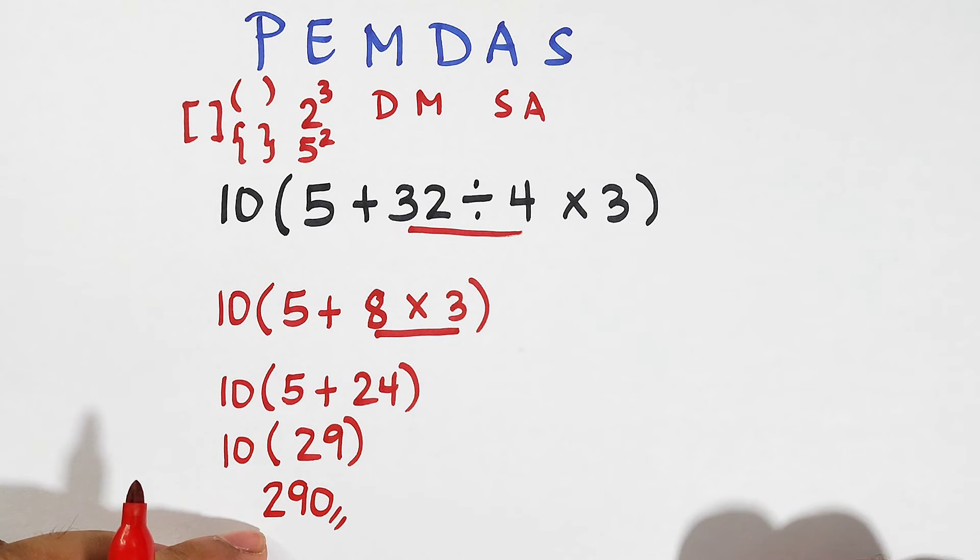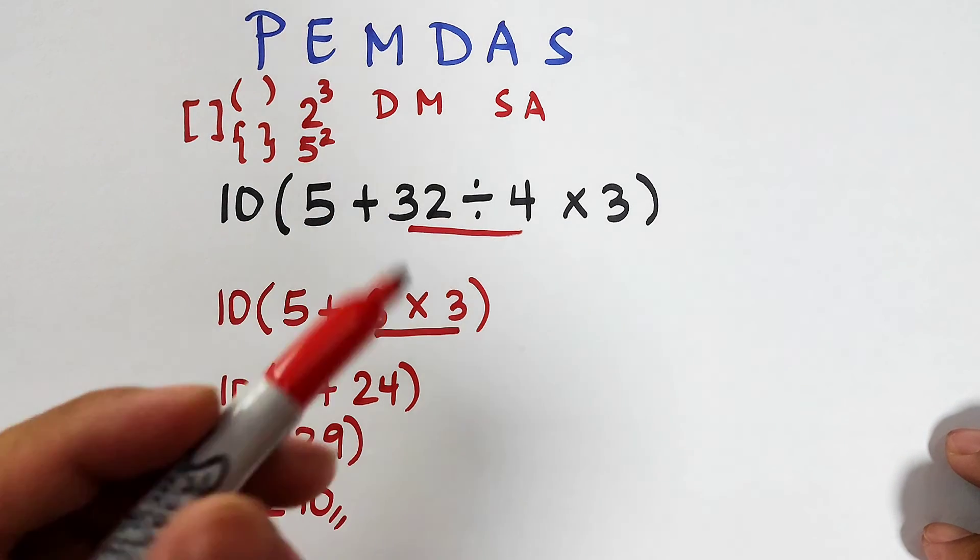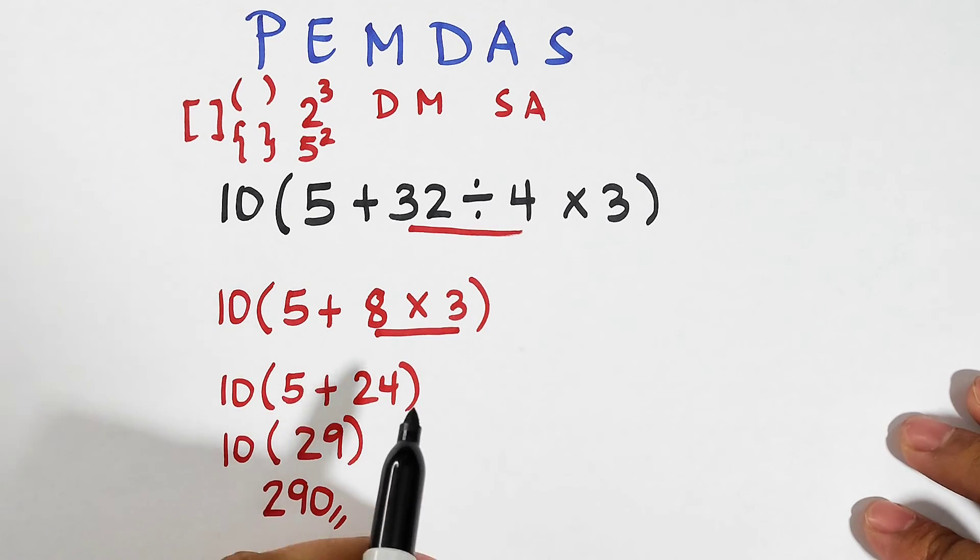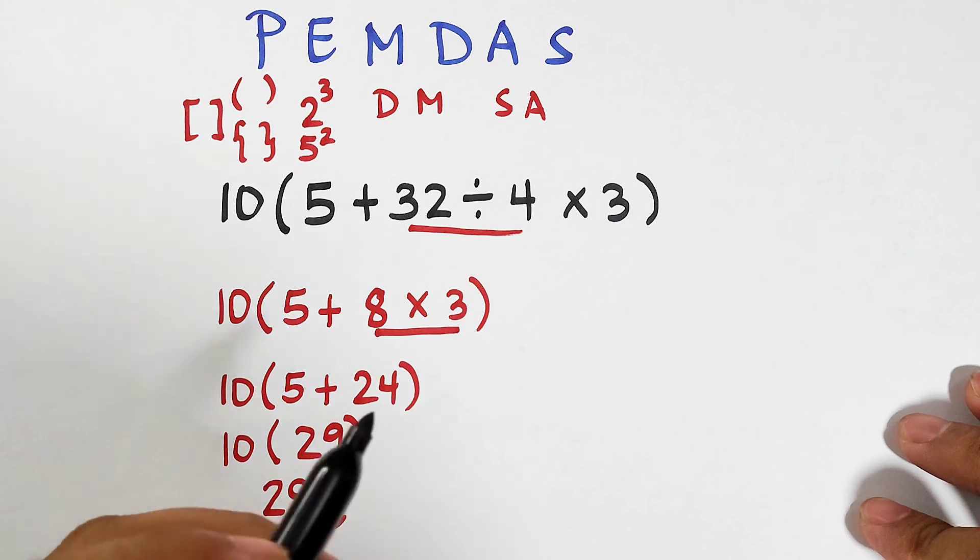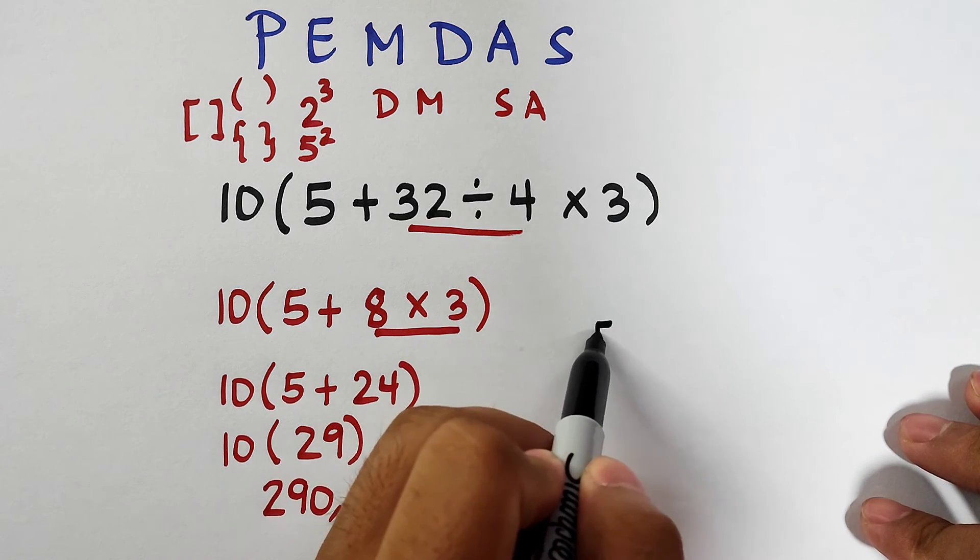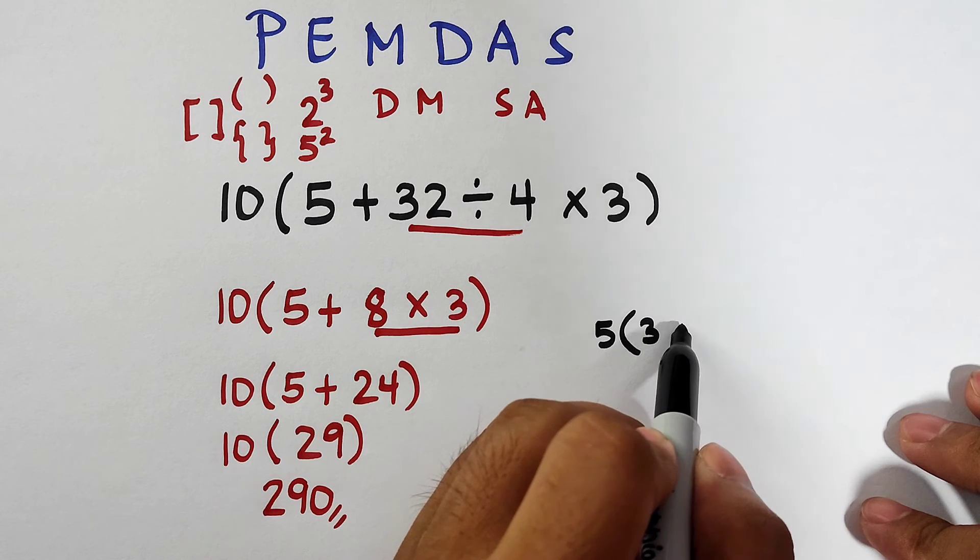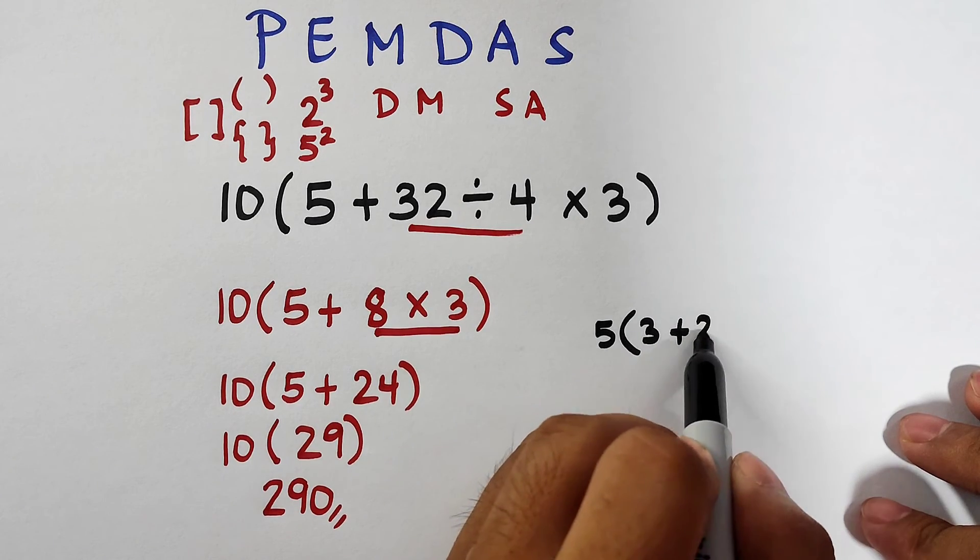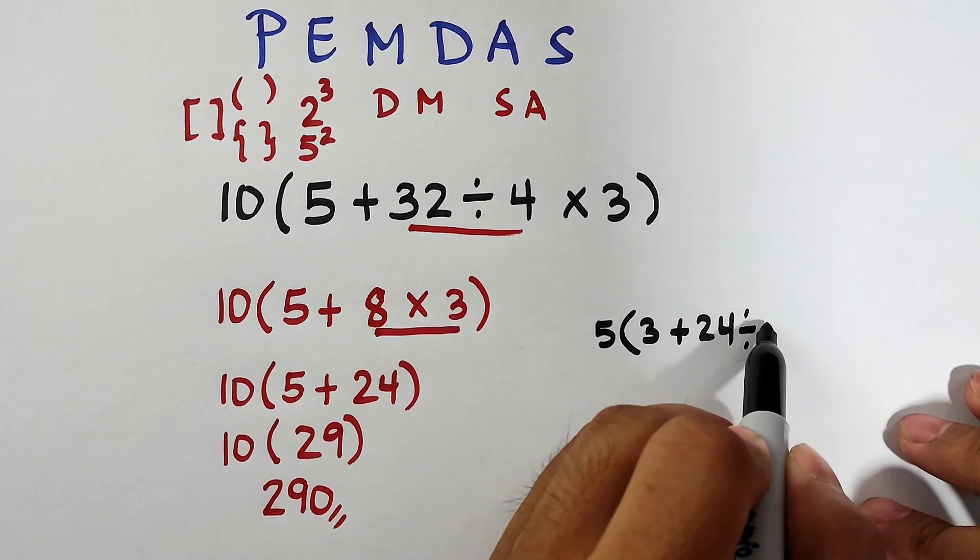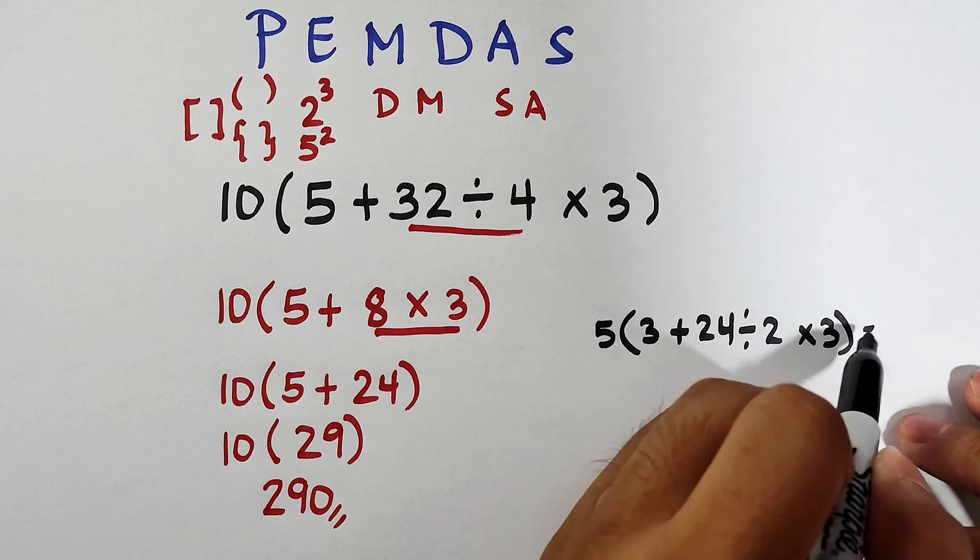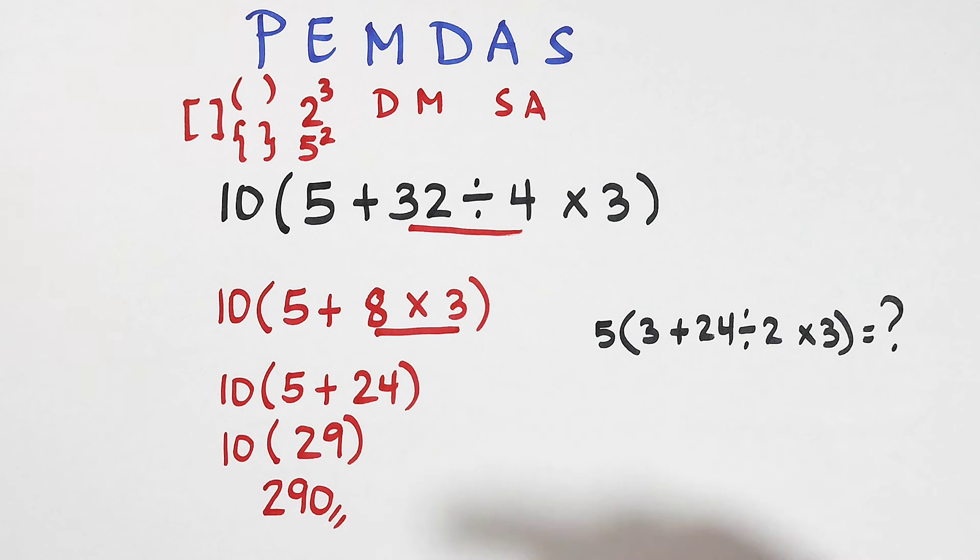So let me give you another example for you to simplify using this rule. This will be your take-home activity after watching this video. We have 5 times (3 plus 24 divided by 2 times 3). Let me know in our comment section what is your answer in this problem.